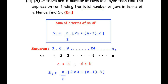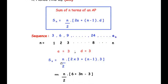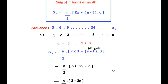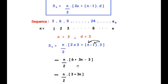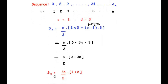Simplifying: Sₙ = (n/2) × [6 + 3n − 3]. Then 6 − 3 = 3, so Sₙ = (n/2) × (3 + 3n). Since 3 is a common factor in the bracket, we write Sₙ = (3n/2) × (1 + n). This is the general expression for the total number of jars in n layers.